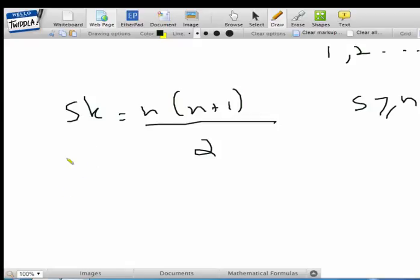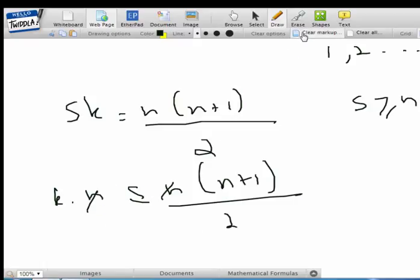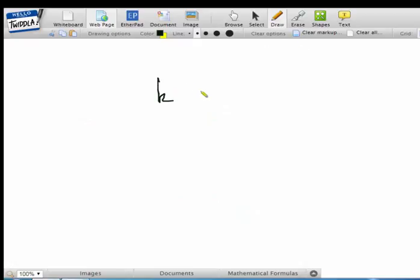So k times n is less than or equal to n times n plus 1 divided by 2. Just cancel those off. And finally, you get k is less than or equal to n plus 1 over 2.